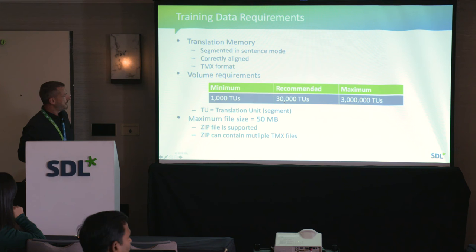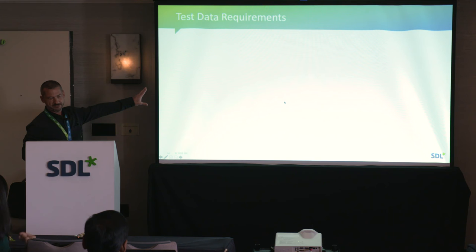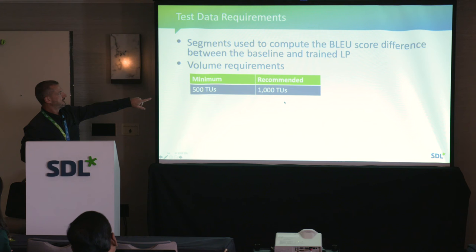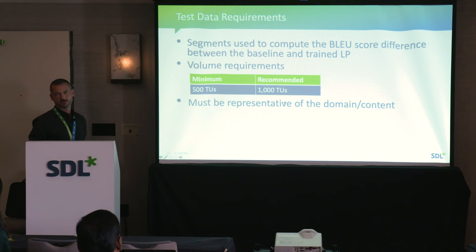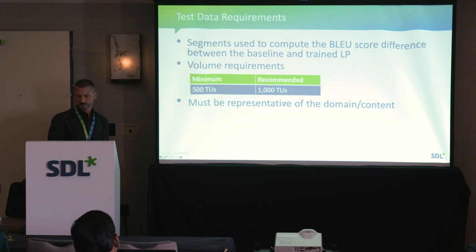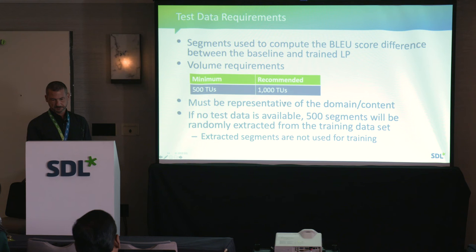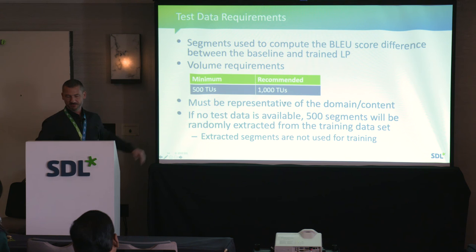For test data, the minimum is 500 translation units, which is what we extract automatically. What we recommend is usually around 1,000. This test data must also be representative of the domain and content used in training — testing with data from a different domain doesn't make sense.